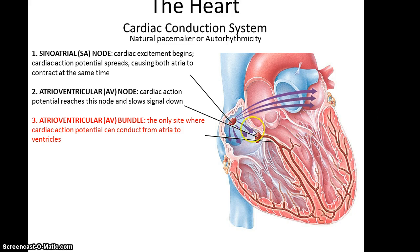The signal also continues down through the atria to what's referred to as the atrioventricular node. Here, the cardiac action potential, when it reaches this node, actually slows down — sort of pauses for a second to prevent the ventricles from contracting at the same time as the atria.